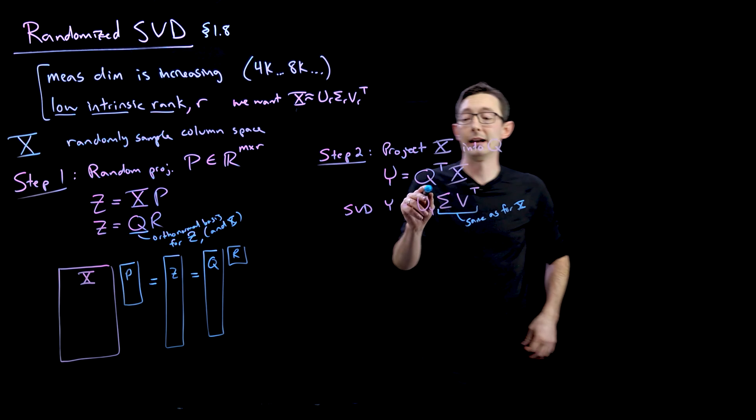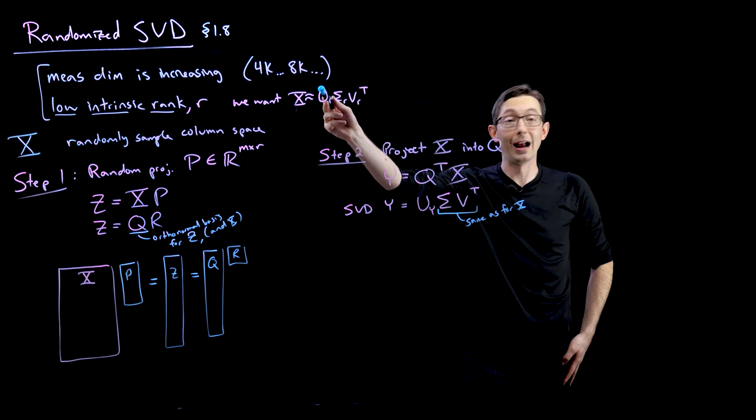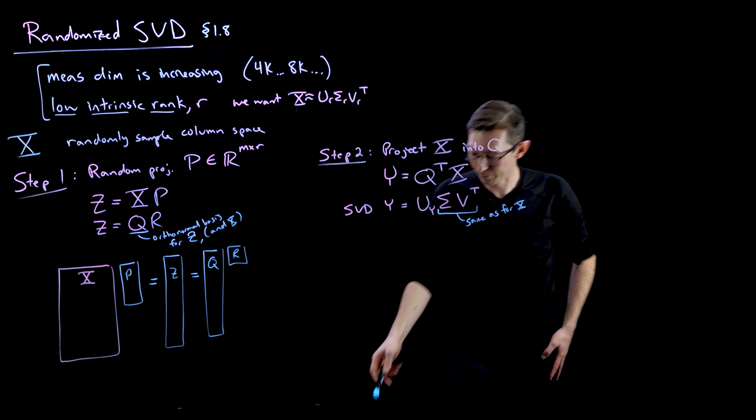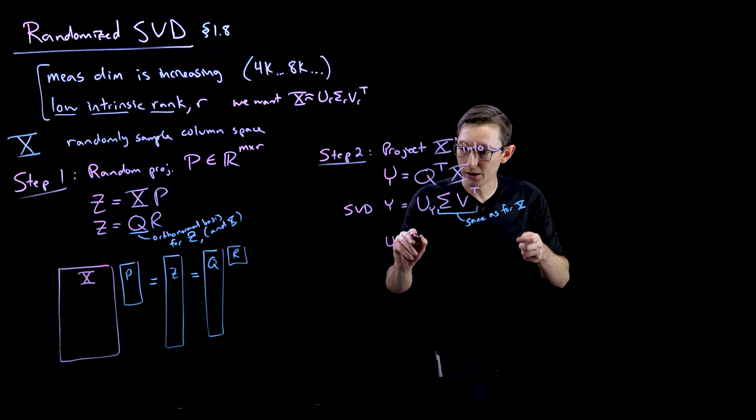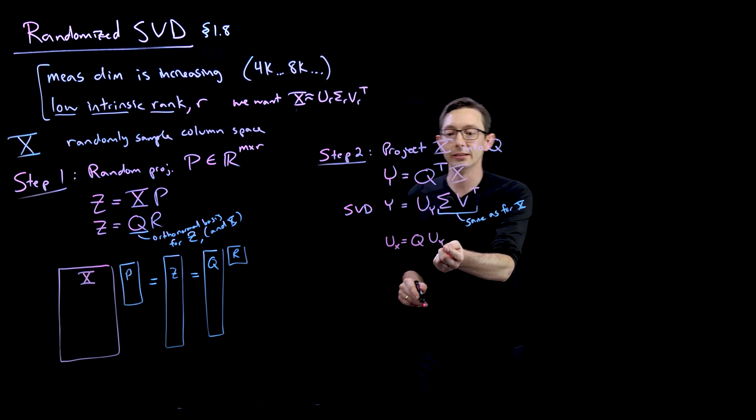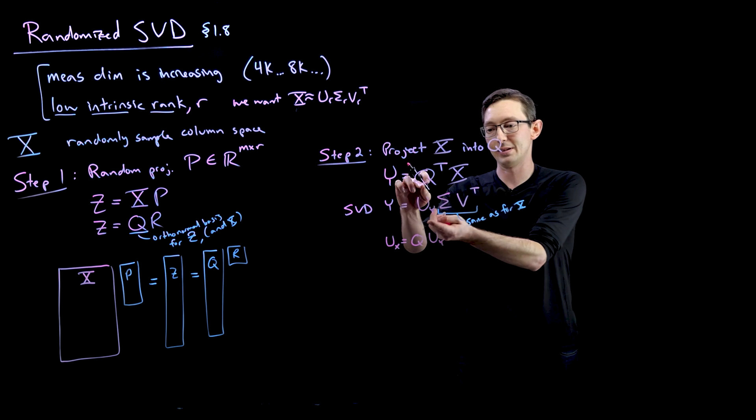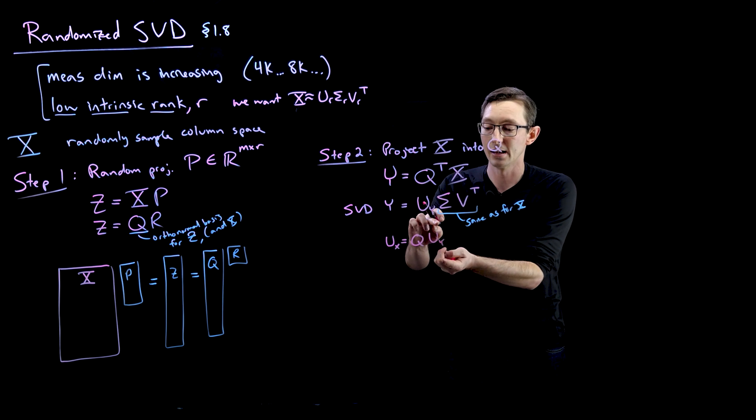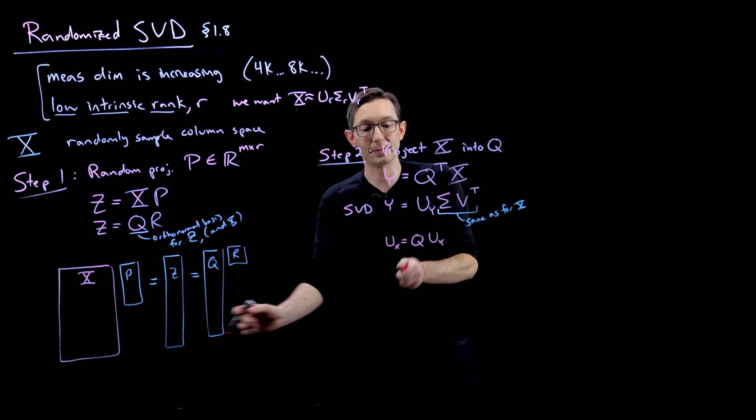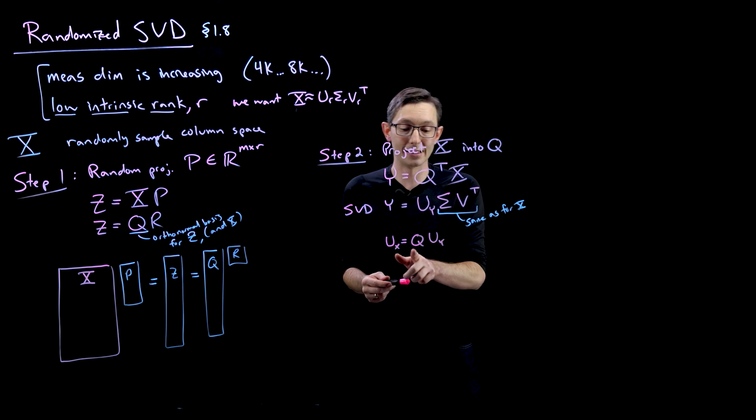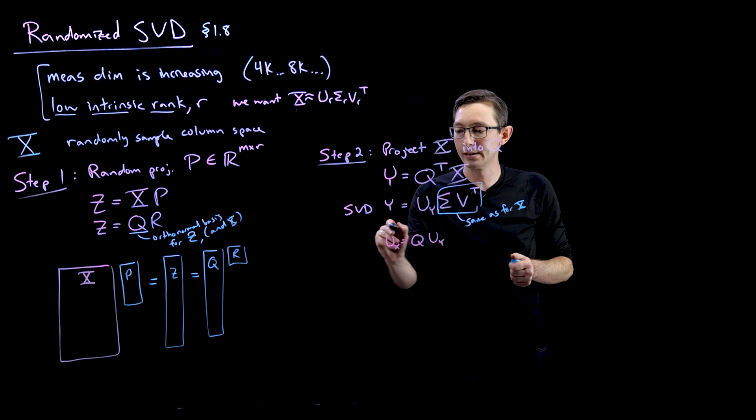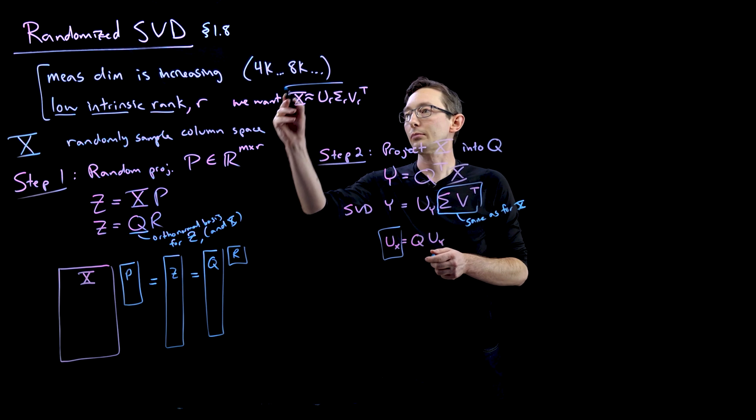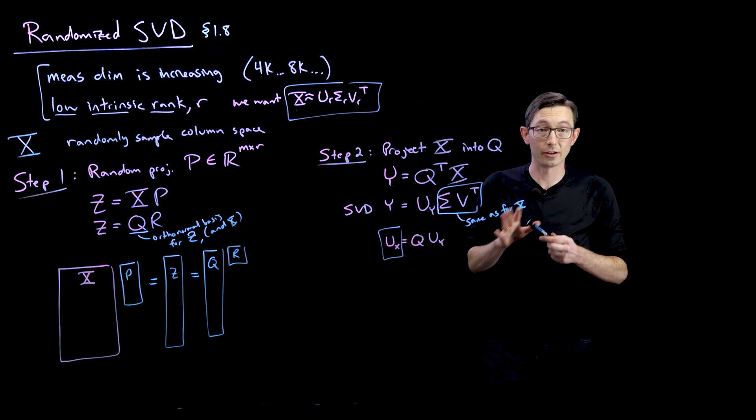So now I have my sigma and my V. All I have to do is compute my U for X based on my U from Y. And so the last step is pretty easy. You just compute U_X equals Q times U_Y. You just lift these small kind of size r singular vectors back to this really high dimensional, n dimensional space through this Q matrix. So this kind of lifts it back to the space we want to be in. So these are the components that we want for our rank r singular value decomposition of X.